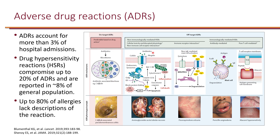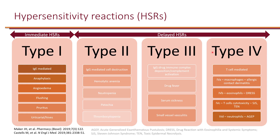A non-immune cell receptor-mediated example would be aminoglycosides causing nephrotoxicity, in particular acute tubular necrosis. When the immune system is involved, it's useful to think of whether antibodies or T cells are mediating the reaction. We generally categorize hypersensitivity reactions into four types.